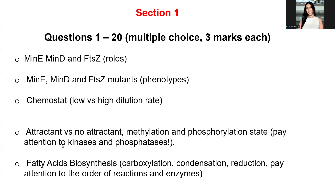In terms of fatty acid biosynthesis, we talked about the specific pathway involving carboxylation, condensation, dehydration, and reduction. Pay attention to the order of the enzymes, specifically the reductions — when each one is happening. You have two reductions and one of them is specifically important as an antibiotic target.